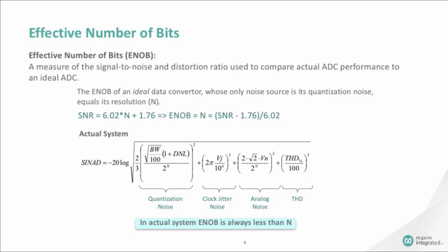But in a real system, the ADC is subjected to other noise sources besides the quantization noise. These are the clock jitter noise, analog noise, total harmonic distortion, etc. Thus, the effective number of bits is always smaller than the resolution N of the ADC.